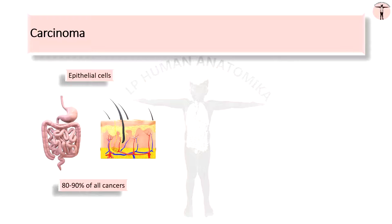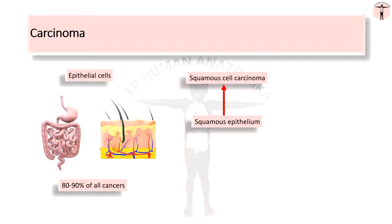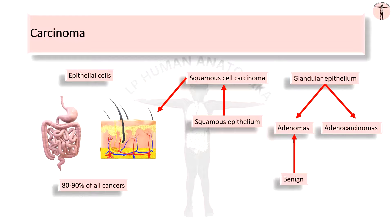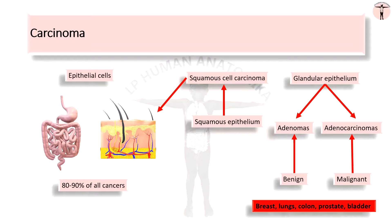Two types of epithelial cancers are observed. The first is squamous cell carcinoma, where cancers arise from the squamous epithelium; this type is usually found in the skin. The second type arises from glandular epithelium and is of two types: adenomas and adenocarcinomas. They are called adenomas when benign in nature and adenocarcinomas when malignant. They often spread easily through soft tissues and occur usually in the breast, lungs, colon, prostate, and bladder.